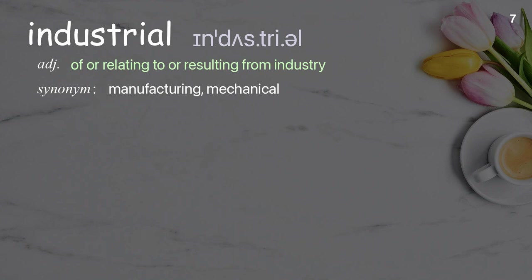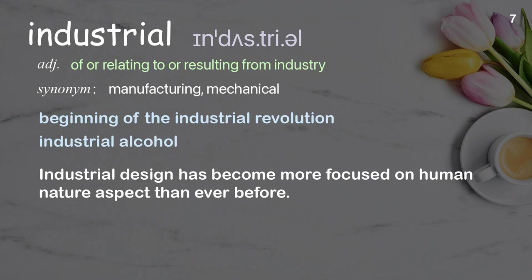Industrial: of, relating to, or resulting from industry. Examples: beginning of the industrial revolution, industrial alcohol. Industrial design has become more focused on human nature aspects than ever before.